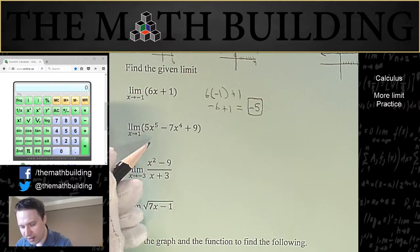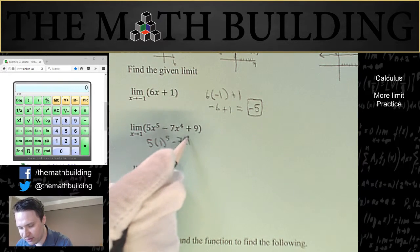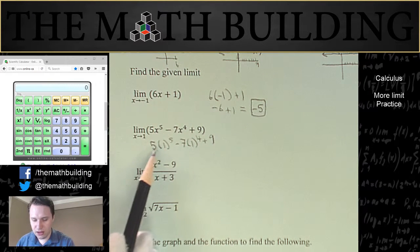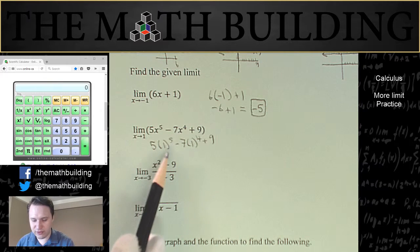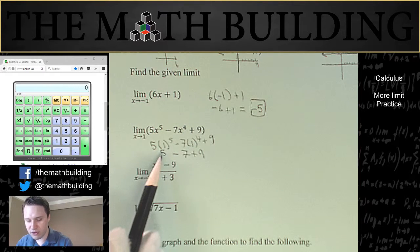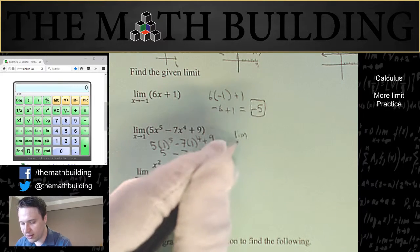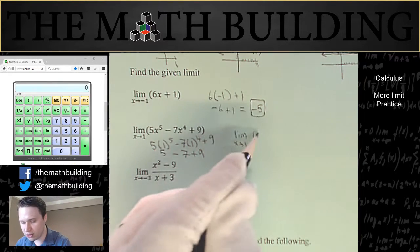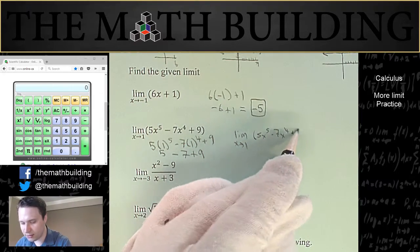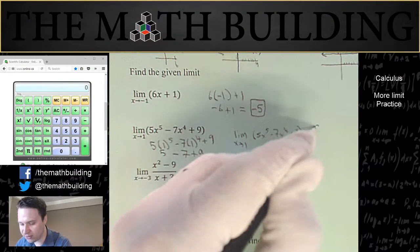Same with this one. Let's plug in 1. Notice I'm putting it in parentheses because you should do that in case there's a negative sign. So 5, 1 to any power is equal to 1, so that's just going to be 5 times 1 is 5, minus 7 plus 9. So 5 minus 7 is negative 2. Negative 2 plus 9 is 7. So the limit as x approaches 1 of this function, 5x to the 5 minus 7x to the 4 plus 9, that limit is going to equal the value we got, which was negative 2 plus 9, which was 7.